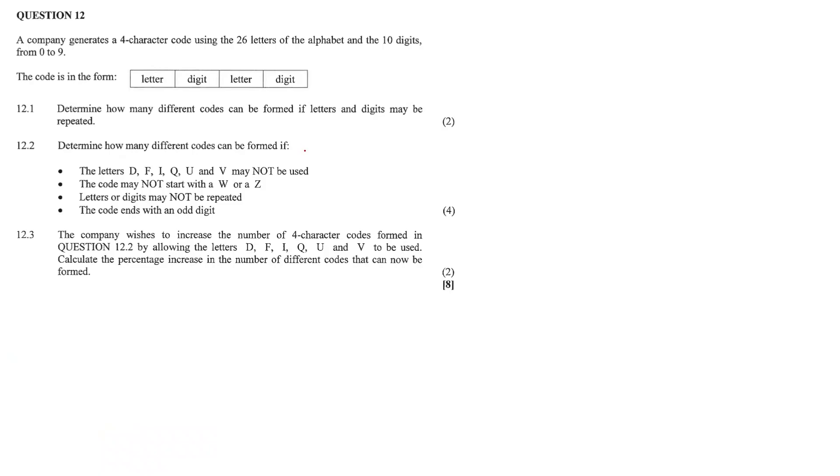Hi guys, today we'll be looking at a question on first counting principle. A company generates a four character code using 26 letters of the alphabet and 10 digits from 0 to 9. The code is in the form letter digit, letter digit.